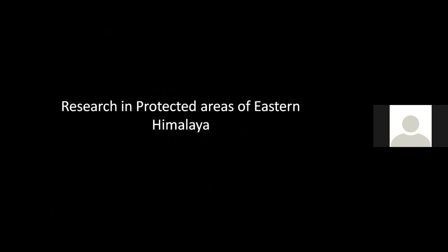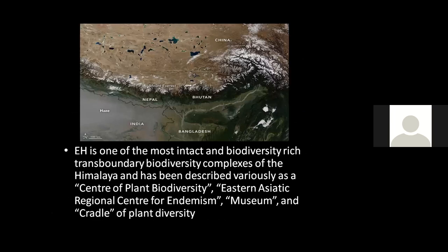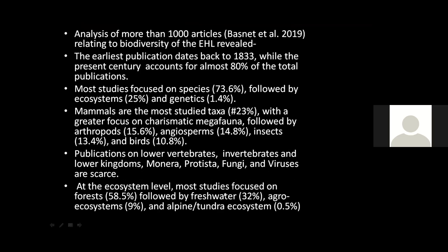Now turning to research in protected areas of the eastern Himalaya. The eastern Himalaya includes the Terai Arc encompassing Nepal, Bhutan, Sikkim-Darjeeling, and northeastern India. It is the most intact biodiversity-rich area and a trans-boundary biodiversity complex of the Himalaya. It has been described as a center of plant diversity and the Eastern Asiatic Regional Center for Endemism. Around one thousand articles related to biodiversity from this landscape were analyzed by Besneth et al. in 2019.